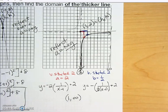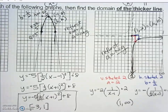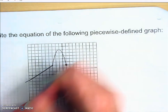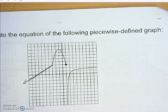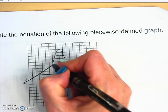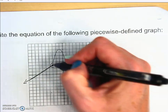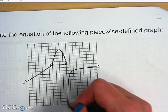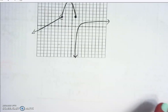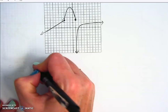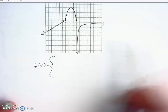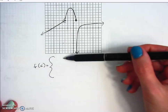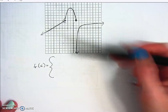Now that we have equations for all three pieces, we're going to put them together into one piecewise function. These are the three shapes we just discussed — the linear piece, the quadratic piece, and the one-over-x piece. We write the piecewise function going from left to right, written top to bottom.